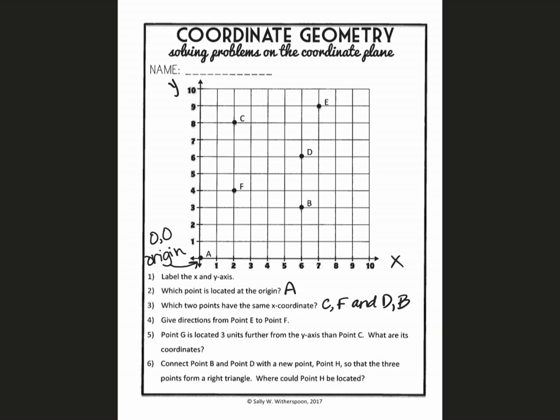So on number four, it's asking us to give directions from point E to point F. So first I locate point E. And I want to be sure that I move along my x axis first. So in order to get towards point F, I need to go left. And I'm going to move along the grid lines and count how many spaces I go.